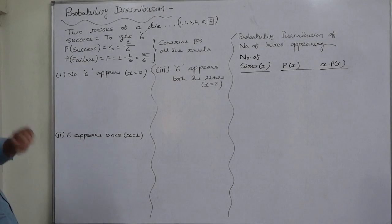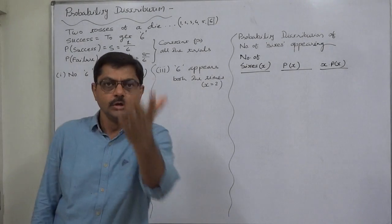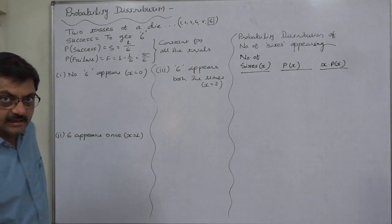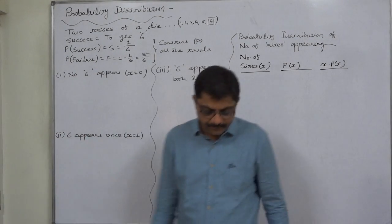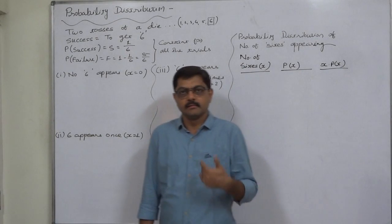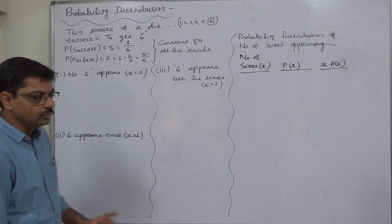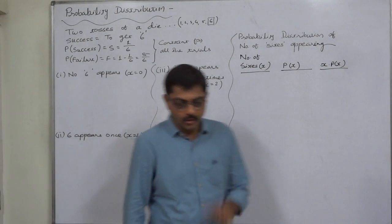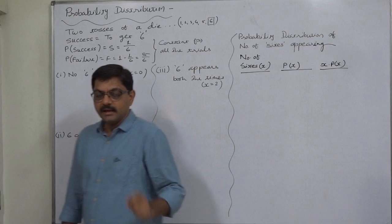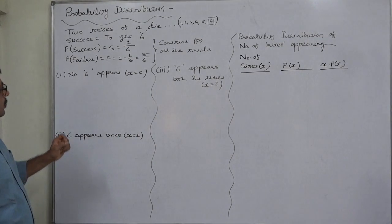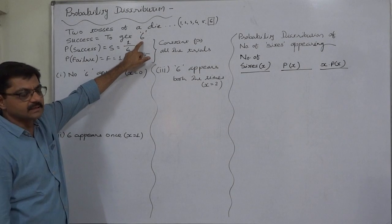First of all, the case is two tosses of a die — a cubical die is tossed two times, meaning there are two trials and success is to get a six. Where there are two or more trials, we always solve the problem through the constant probability of the target event in all trials. Here the target event — that is, success — is to get a six.